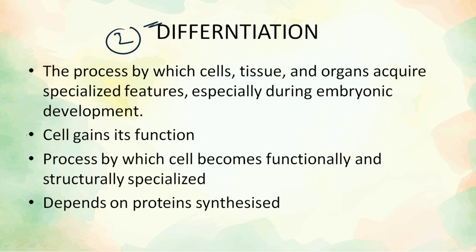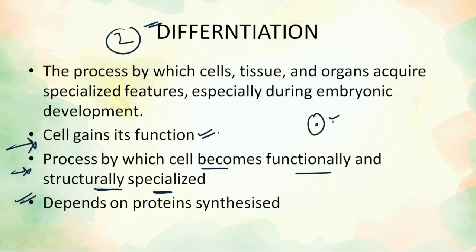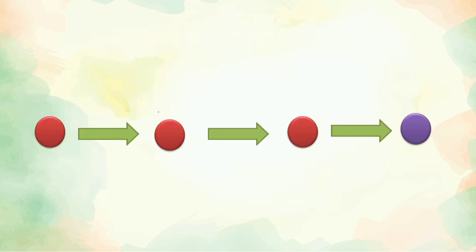The second stage is determination. Determination is the process by which the cell actually gains its function; it depends on the protein that is synthesized. The cell becomes fully functional and structurally specialized. The complete commitment is now being fulfilled, and the cell is determined to form a specific type. This is the process by which the cell, tissues, or organs acquire a specialized feature, especially during embryonic development.